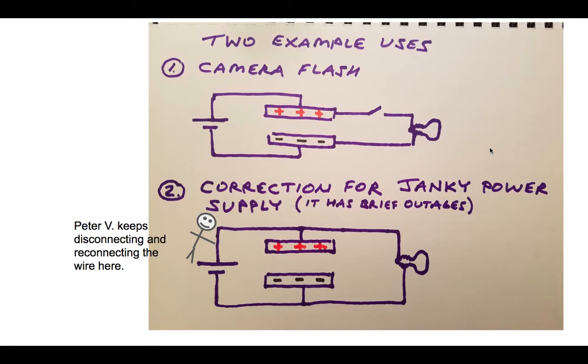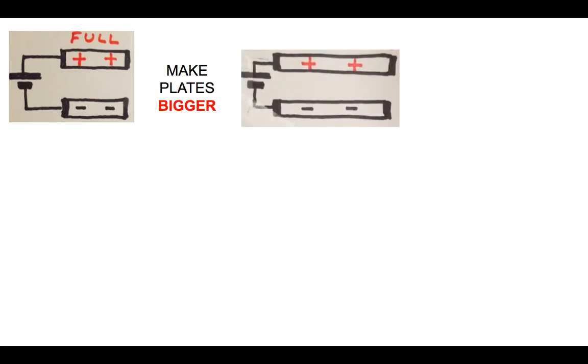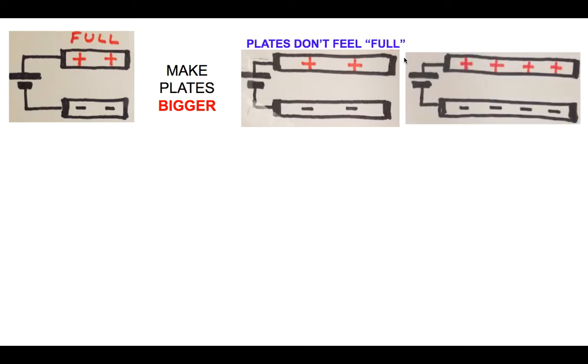A couple little things you can do to adjust capacitors. Here's a schematic of one that's filled up—we've connected it to the battery, it's full of charge. Let's suppose we make the plates a little bigger. In fact, let's suppose we make them twice as big. What you might notice is the plates don't seem as crowded now. They got more room—it's a bigger beach, you can fit more tourists on the beach. What will happen is charge is going to start flowing to the plates because they don't feel full at this point. You're able to store more charge on the plates if the plates are physically bigger. This is a way to increase the capacitance by just making the plates bigger.